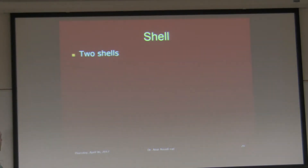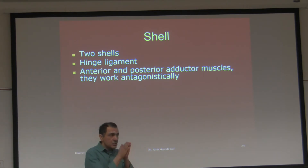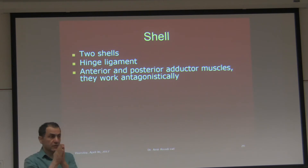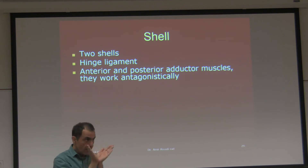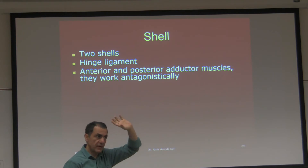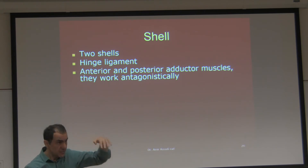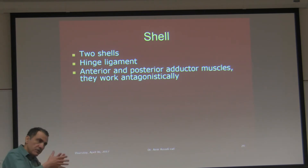They have two shells with hinged ligaments connecting them together, and anterior and posterior adductor muscles. If you grab a clam and try to open it, it is very, very tough because of these adductor muscles. They have two — one anterior and one posterior. When the animal dies it is very hard to open; you have to cut these muscles with a scalpel and force the shell open.